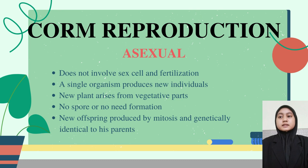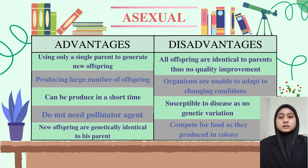Corm reproduction is an asexual reproduction. Asexual reproduction doesn't involve any sex cell and fertilization, which means only a single organism produces new individuals. A new plant arises from vegetative parts, so there is no spore or seed formation, and new offspring are produced by mitosis and are genetically identical to their parents.